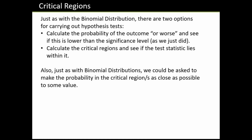Just as with the binomial distribution hypothesis test, we might be asked to calculate critical regions. The method we've just been using calculates the probability of the outcome or more extreme. However, we might instead be asked to find critical regions, and — just as last year with the binomial — we could be asked to make the probability in the critical region or regions as close as possible to some given value.